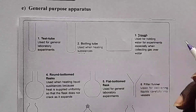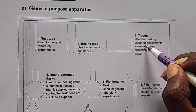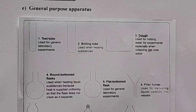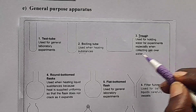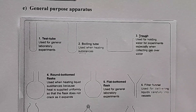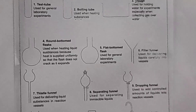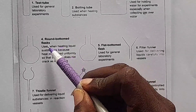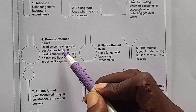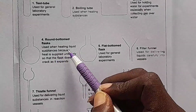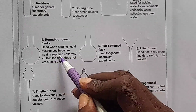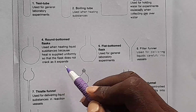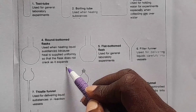Next, we are having a trough. A trough is used for holding water for experiments, especially when collecting gas over water. We use a trough. Then, number four, we are dealing with a round-bottom flask. A round-bottom flask is used when heating liquid substances, because heat is supplied uniformly, so that the flask does not crack as it expands.